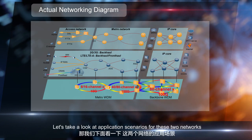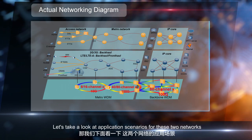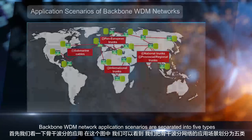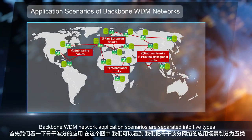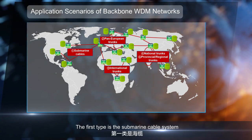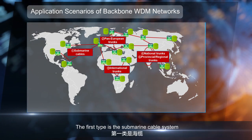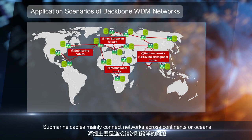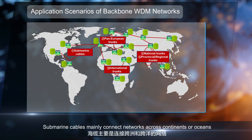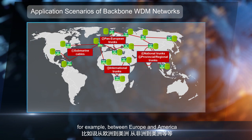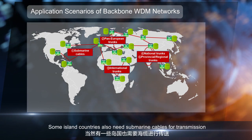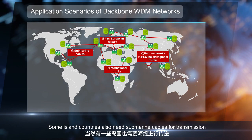Let's take a look at application scenarios for these two networks. Backbone WDM network application scenarios are separated into five types. The first type is the submarine cable system. Submarine cables mainly connect networks across continents or oceans — for example, between Europe and America. Some island countries also need submarine cables for transmission.